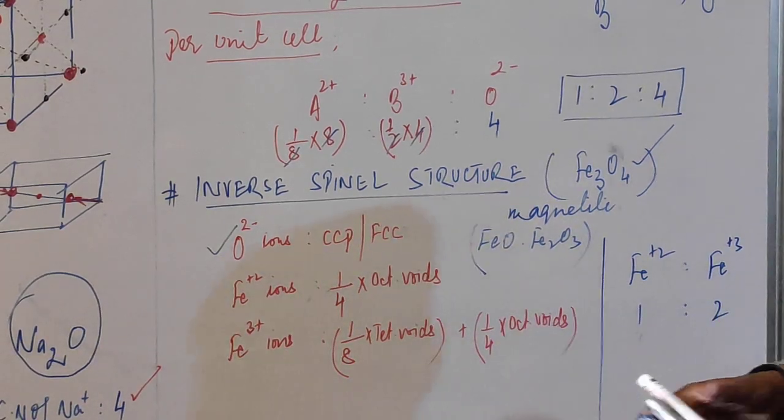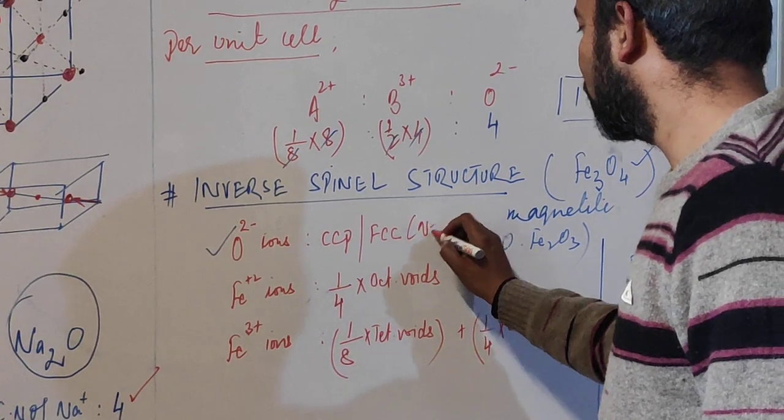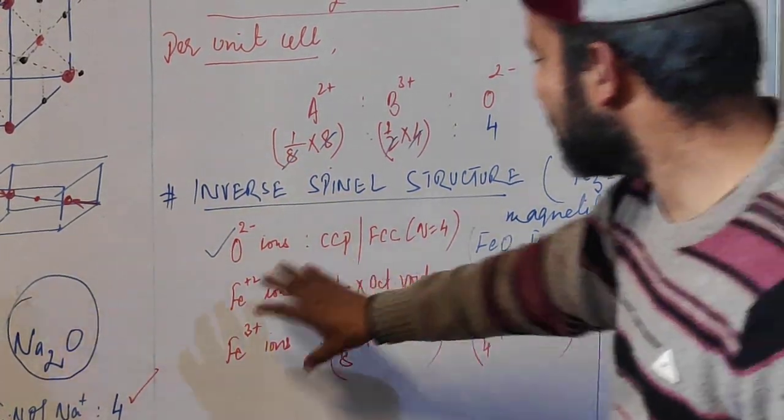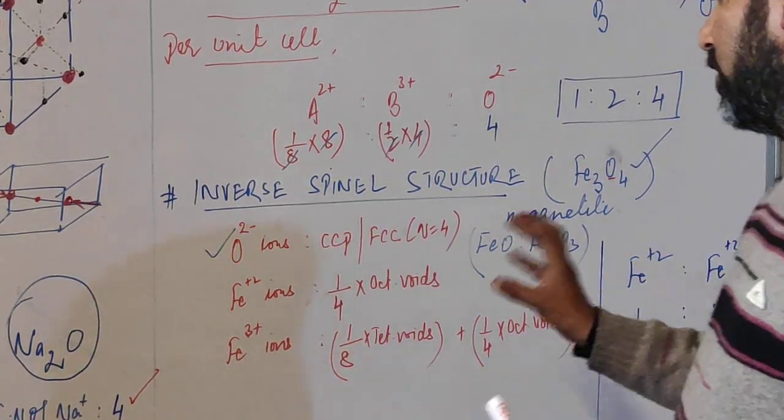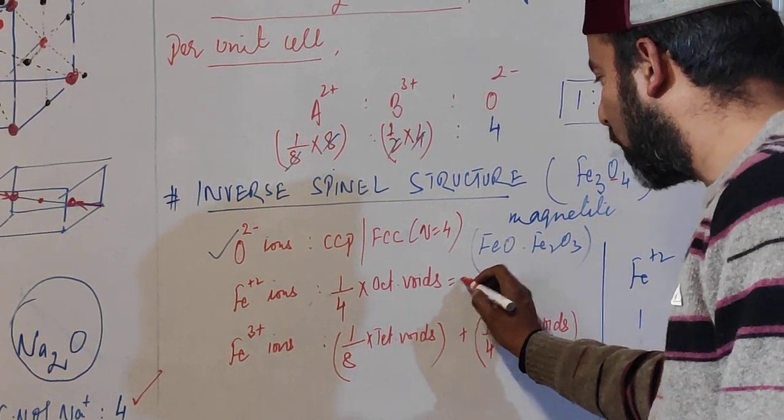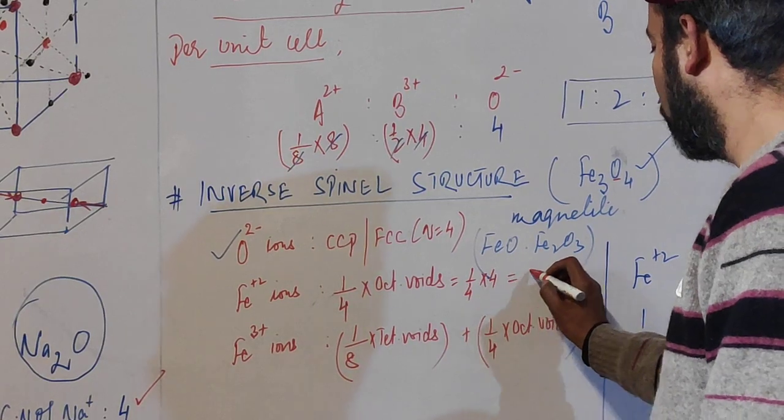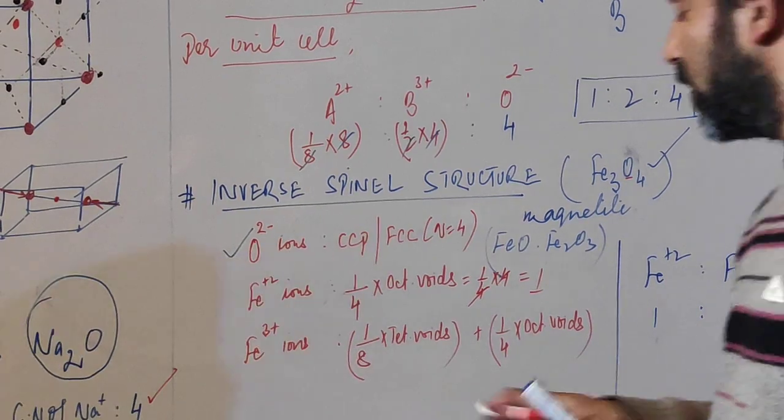In this lattice, per unit cell we have four oxide ions. Now, ferrous ions occupy one-fourth of the octahedral voids in the lattice, which means we have one ferrous ion per unit cell.